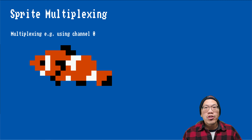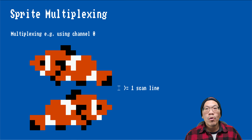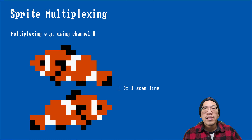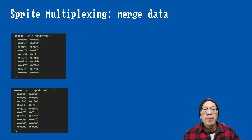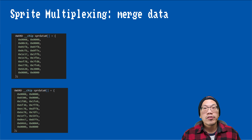I wanted to briefly touch on the topic of sprite multiplexing. The Amiga makes it rather easy to tell a sprite DMA channel to display more than one sprite within the same frame. The only requirement is that they need to be separated by at least one scan line. Do you still remember that the sprite data structure ends with a pair of words that are set to zero? Now to tell the sprite channel that we want to display another sprite below the first one, we just have to append another data array in its place.